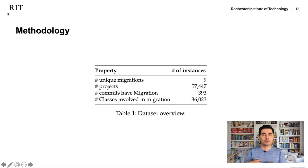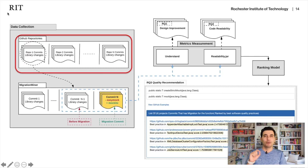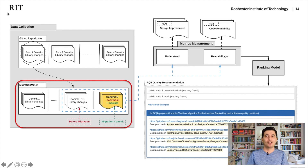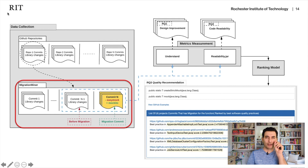The study used an existing dataset provided by a prior paper containing projects with migrations. Our methodology: we took these projects, scanned them one by one, and ran Migration Miner — a tool that detects whenever a migration happens. If you give it 10 projects, it will tell you in which commit there is a migration happening from one library to another, identifying the exact points where migration occurred.